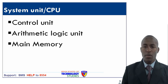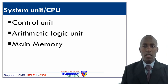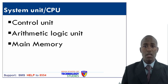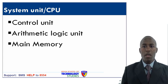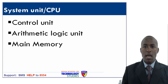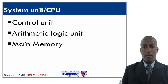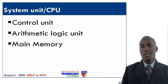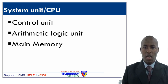The system unit or CPU — central processing unit — is made up of three main elements. The first one is the control unit, which controls or supervises all the computer operations. We also have the arithmetic logic unit, where all mathematical calculations in the computer are carried out. We also have main memory, also called primary storage or internal storage. Main memory is classified into two: RAM, which is random access memory, and ROM, which is read only memory.